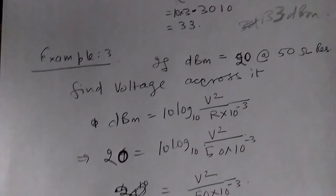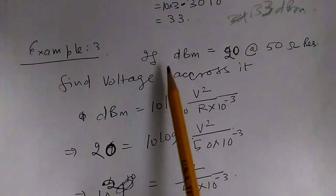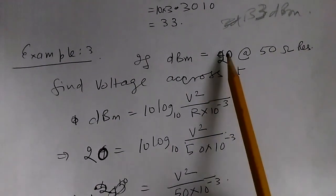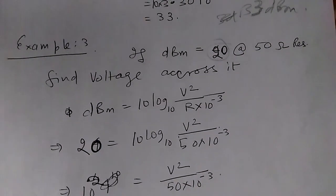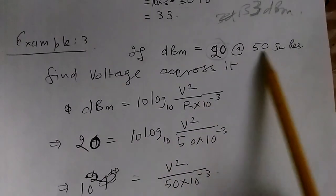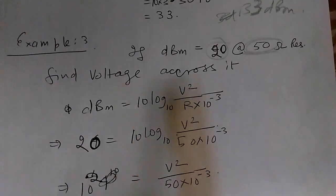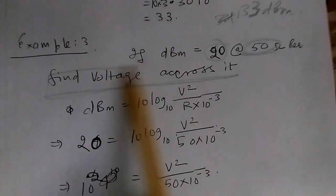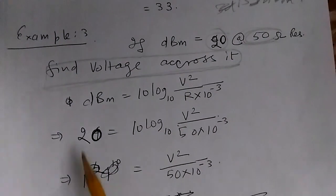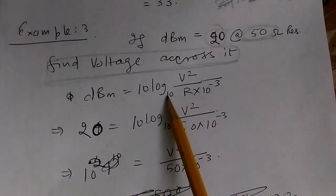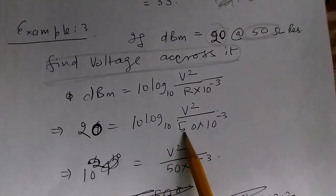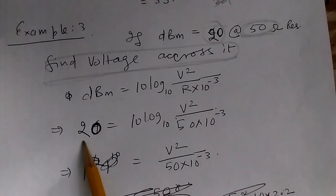Let's look at one final example. If there is 20 dBm power across a load or transistor amplifier output with 50 ohm resistance, what is the voltage? The formula is dBm = 10 log₁₀(V² / (R × 10⁻³)). R is 50 and dBm is 20.